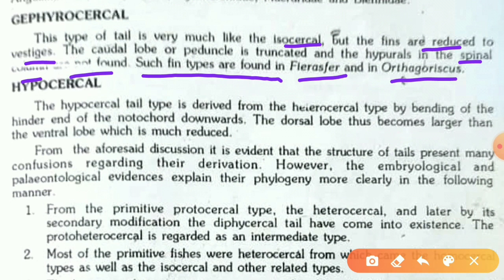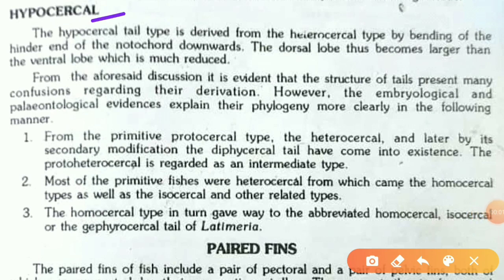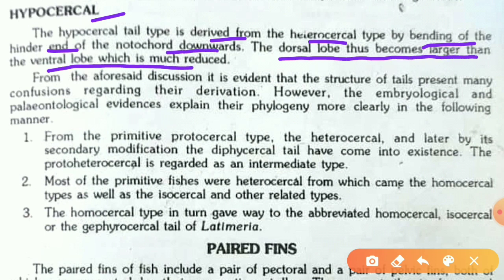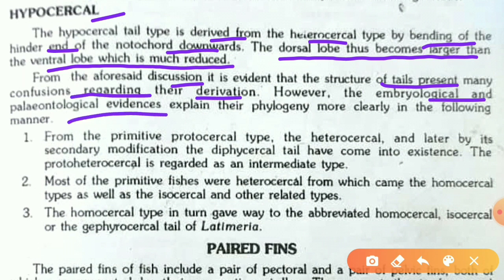The hypocercal tail is derived from the heterocercal type by the bending of the hinder end of the notochord downwards. As a result, the dorsal lobe becomes larger than the ventral lobe, which is much reduced. From the foregoing discussion, it is evident that the structure of tails presents many confusions regarding their derivation; however, embryological and paleontological evidence explains their phylogeny more clearly.